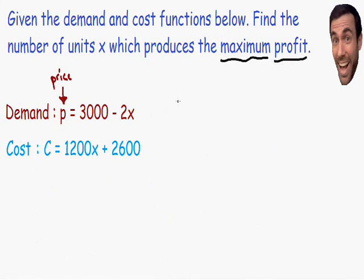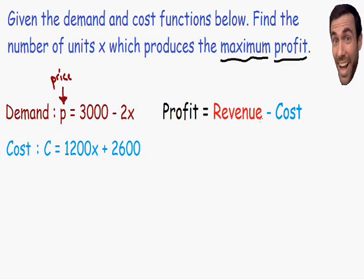How do we find the equation for profit? Using natural intuition, the profit equals the total amount of money you receive from selling a product minus the cost it takes to produce that product. So profit equals revenue minus cost. For example, if you sell a product for $50, you receive $50 in revenue. But if that product costs $20 to produce, your profit would be $50 minus $20, which equals a $30 profit.